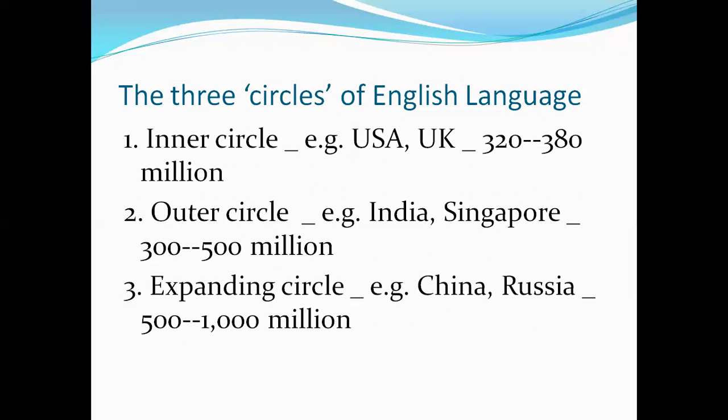The inner circle countries include the USA and UK, representing nearly 320 to 380 million people. This statistics was taken in 1990 or 2001.